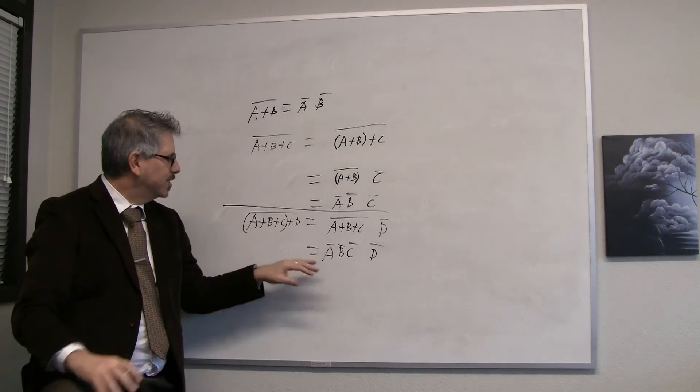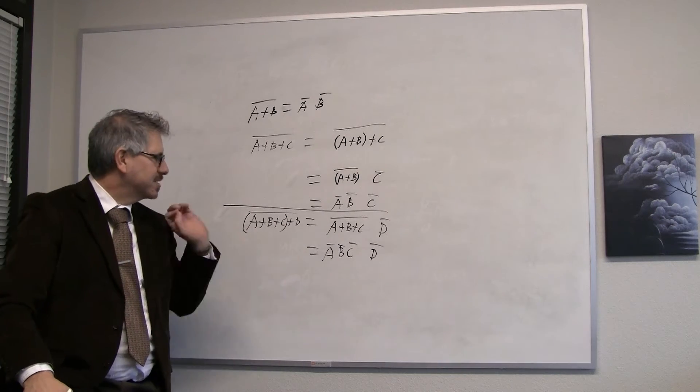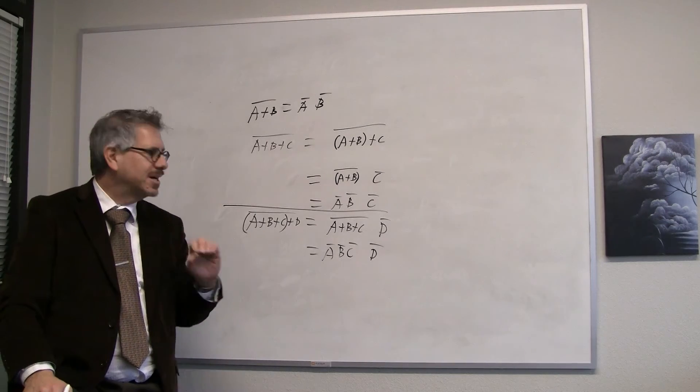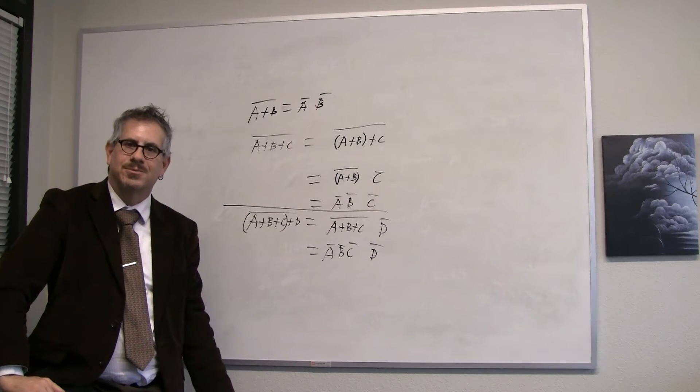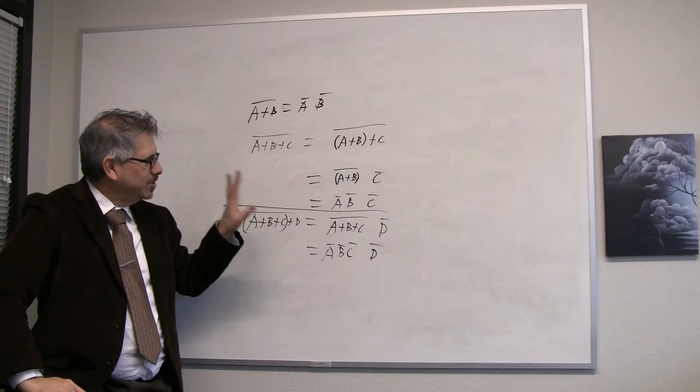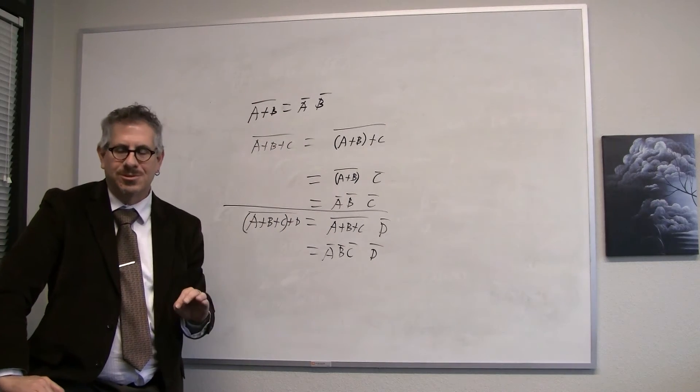That makes sense. And we can look at this and say, I could do this for five variables. It would be exactly the same process. And once I've got this for five variables, exact same process gets it for six variables. So looking at this, we understand that De Morgan's Theorem is true for any number of variables, two or more.